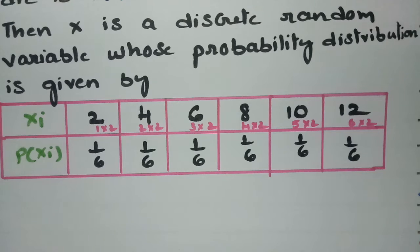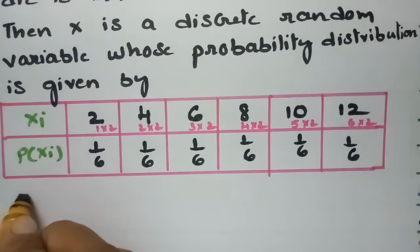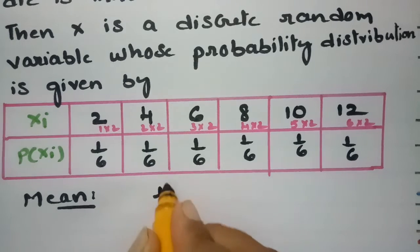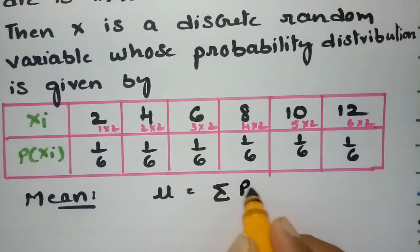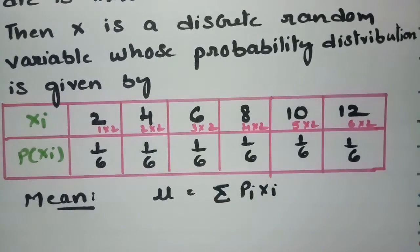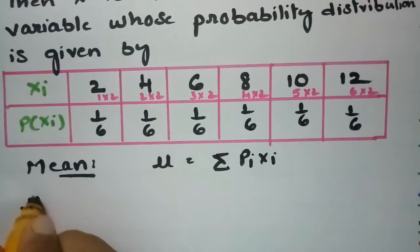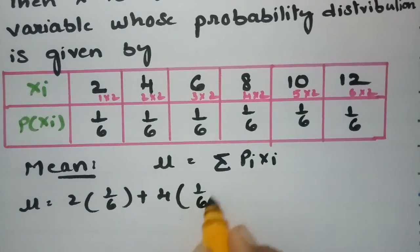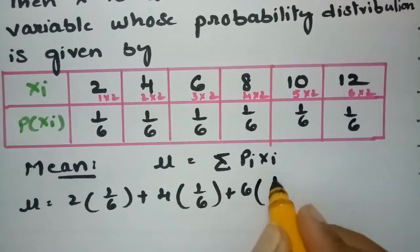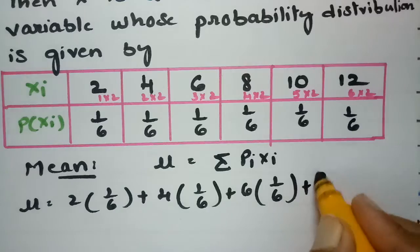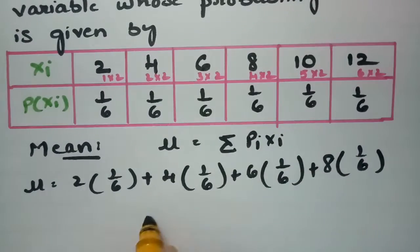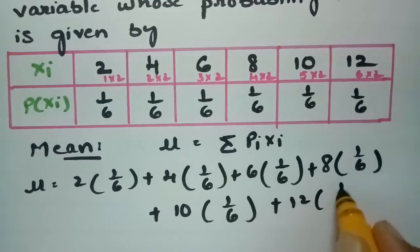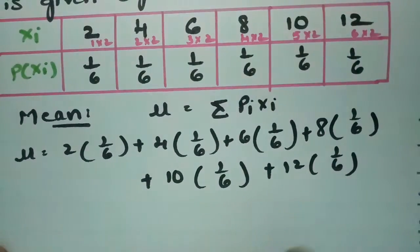Next, we find the mean. The formula for the mean is μ = Σ xi·pi. Therefore, μ = 2×(1/6) + 4×(1/6) + 6×(1/6) + 8×(1/6) + 10×(1/6) + 12×(1/6).